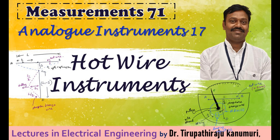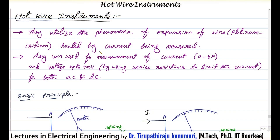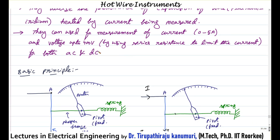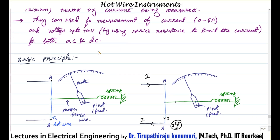Hi all. Today we are going to discuss about hot wire instruments. This is based on the simple phenomenon that whenever you pass the current through some wire or resistance material, a temperature is produced due to the I square R losses.